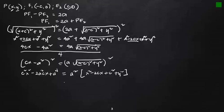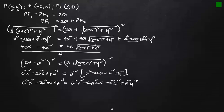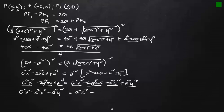Simplifying: the −2a²cx terms cancel from both sides. We then group and rearrange to get c²x² − a²x² − a²y² = a²c² − a⁴. Factoring the left side, we have x²(c² − a²) − a²y² = a²(c² − a²).